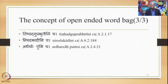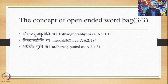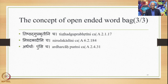We also have several Sutras considered to be Akriti Ganas as far as Samasas are concerned. Tishthadgu Prabhrutinicha is a Sutra consisting of a list called Tishthadgu, etc., a very peculiar list with very complex elements. Similarly, Nirudhakadhinicha 6.2.184 discusses accent, and Ardhar Chaha Pumsicha 2.4.31 talks about the gender of the compound.